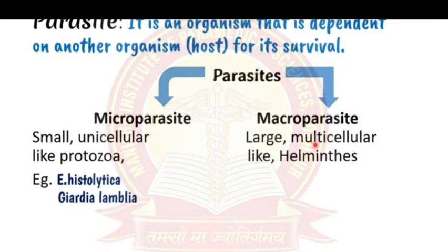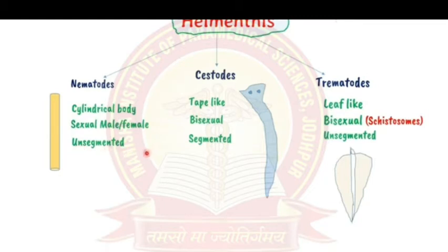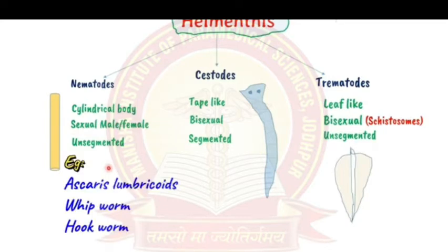Macroparasites include helminths, which are divided into three types: nematodes, cestodes, and trematodes. Nematodes have a cylindrical body — like a finger — with separate male and female individuals, and are unsegmented. Examples include Ascaris lumbricoides, whipworm, and hookworm.